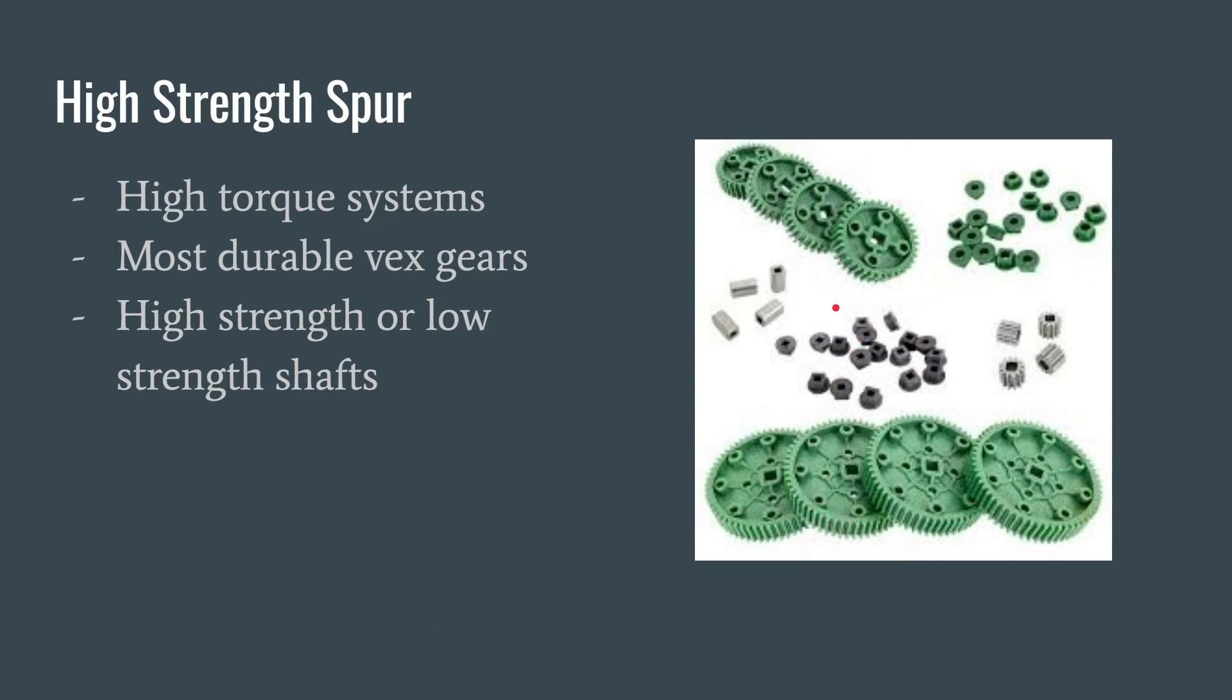The sizes that are sold in the high strength are the 12 tooth, 36 tooth, 60 tooth, and 84 tooth. And then you have these metal inserts right here that go into the square holes. They also can be used with high strength shafts or low strength shafts. That's the reason that these are here and these are here.